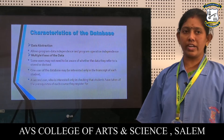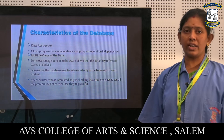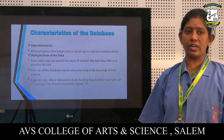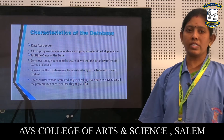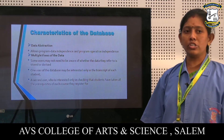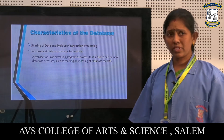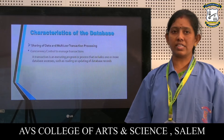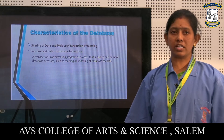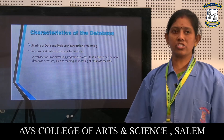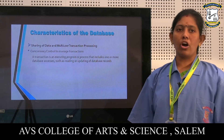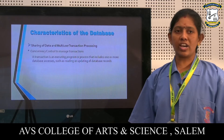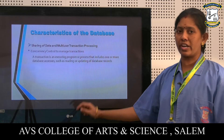One user of the database may be interested only in the transcript of each student. A second user may be interested only in checking that the students have taken all the prerequisites of each course they register for. Next is sharing of data and multi-user transaction processing, that is concurrency control to manage the transactions. A transaction is an executing program or process that includes one or more database accesses such as reading or updating the database records.